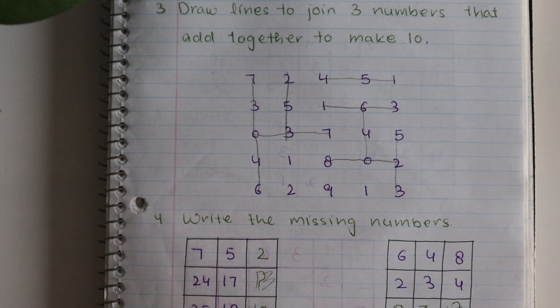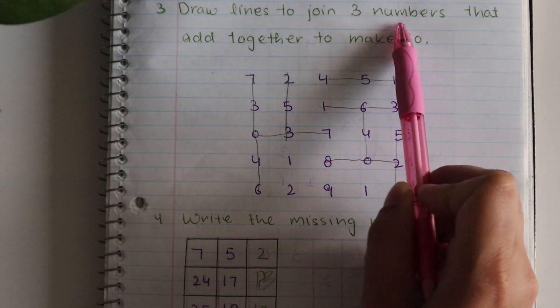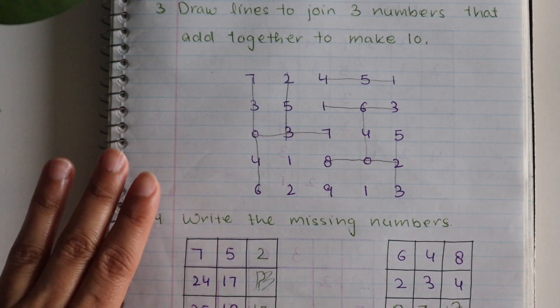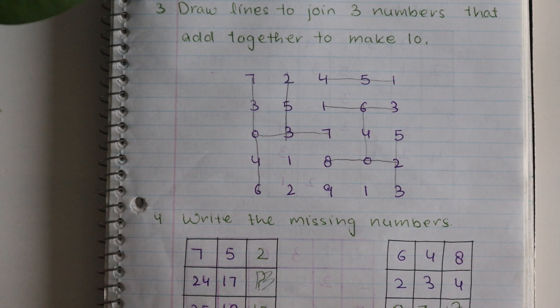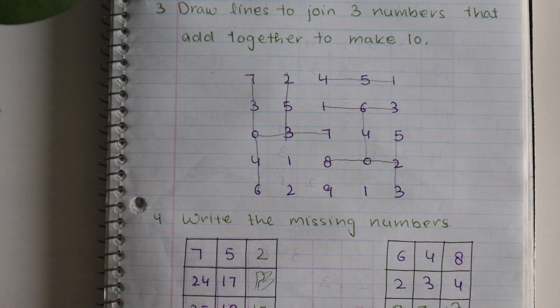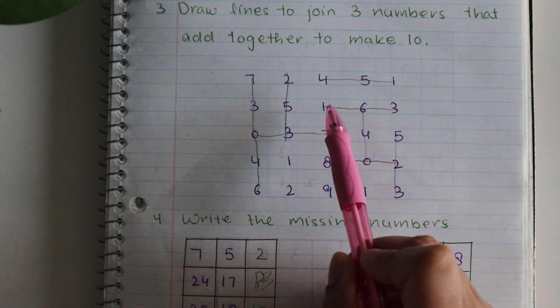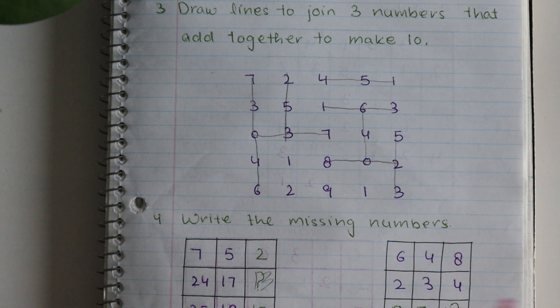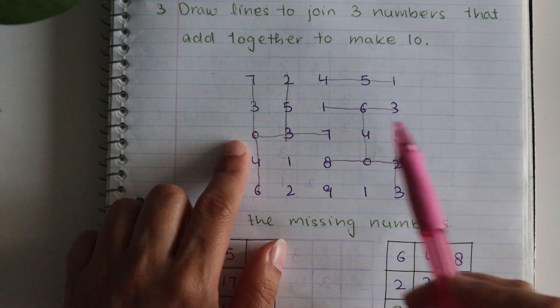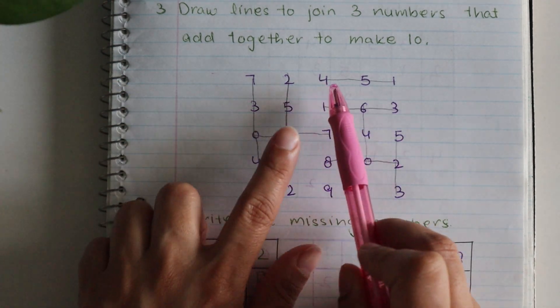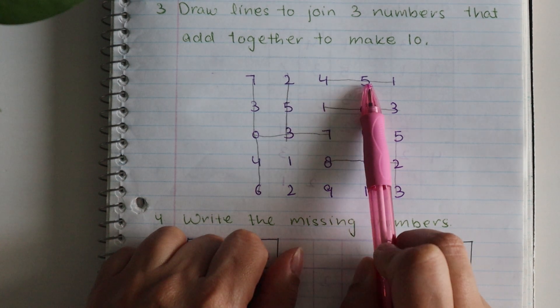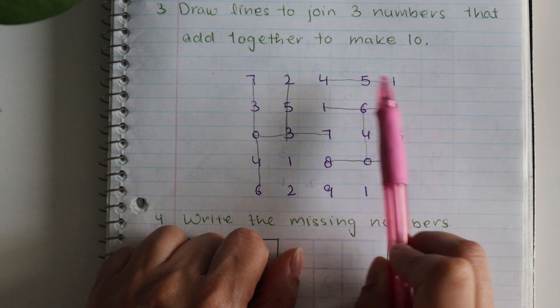Then what will be the sense involved, the body part, the child will fill here. Next, you can see here I have a grid made of numbers. What do you want to do here? Draw lines to join three numbers that add together to make ten. So you want to check this grid here and see which three numbers when we add them, their sum will be ten. So you want to connect those three numbers.